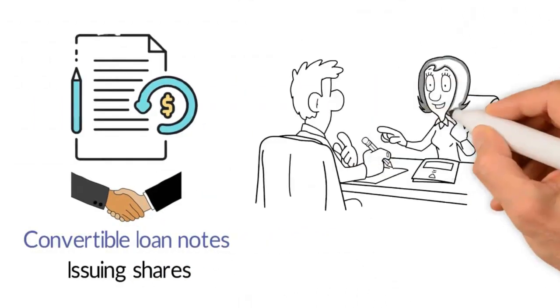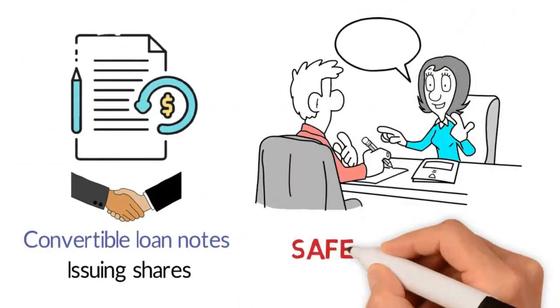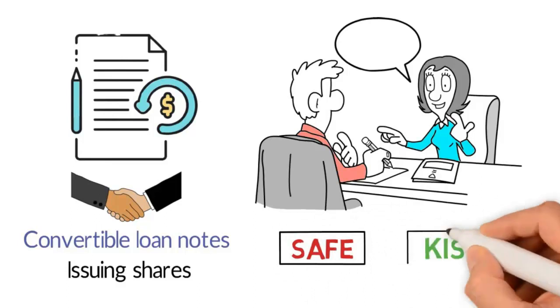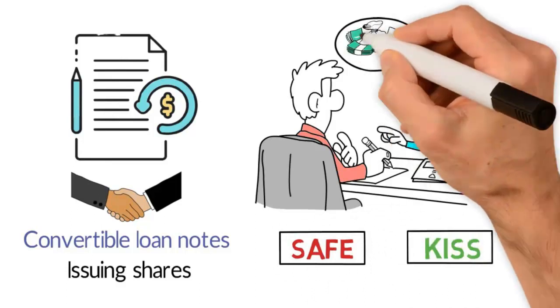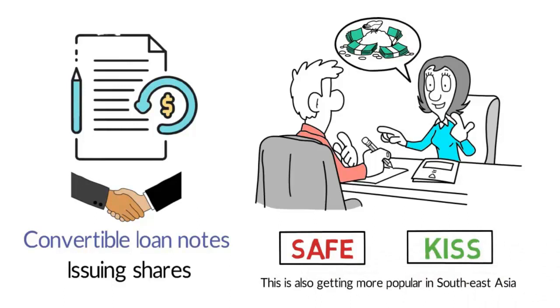More recently, some investors and founders prefer using shorter instruments such as SAFE and KISS in the fundraising process. This is also getting more popular in Southeast Asia.